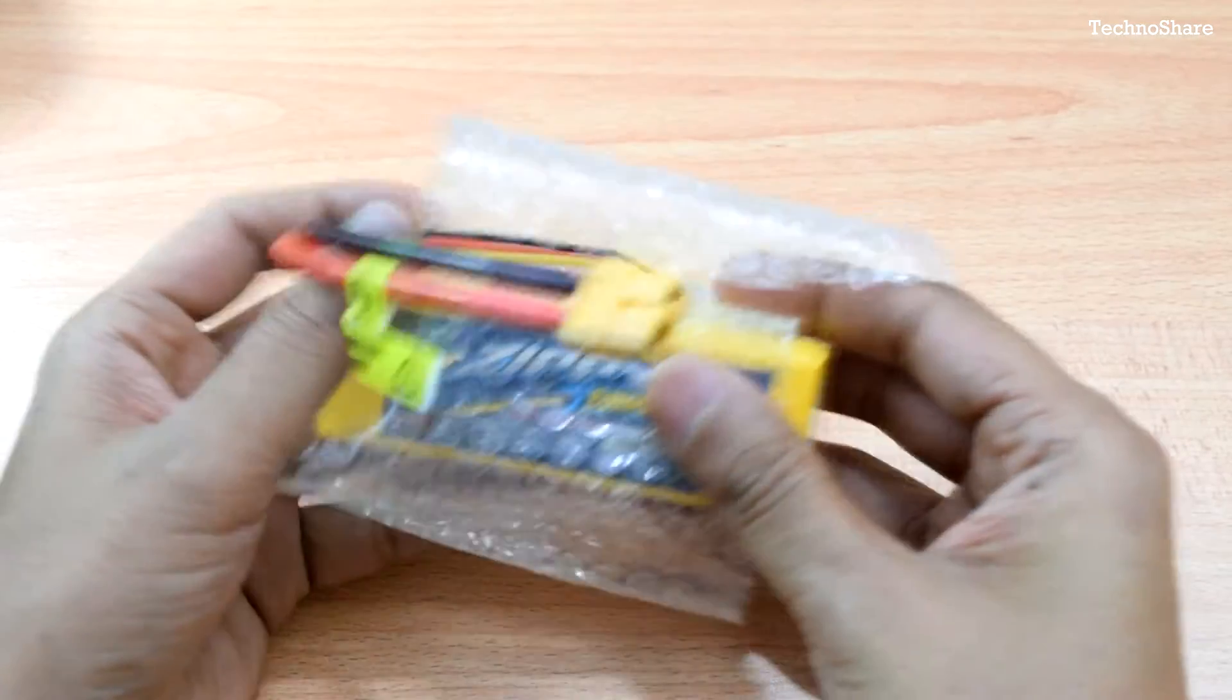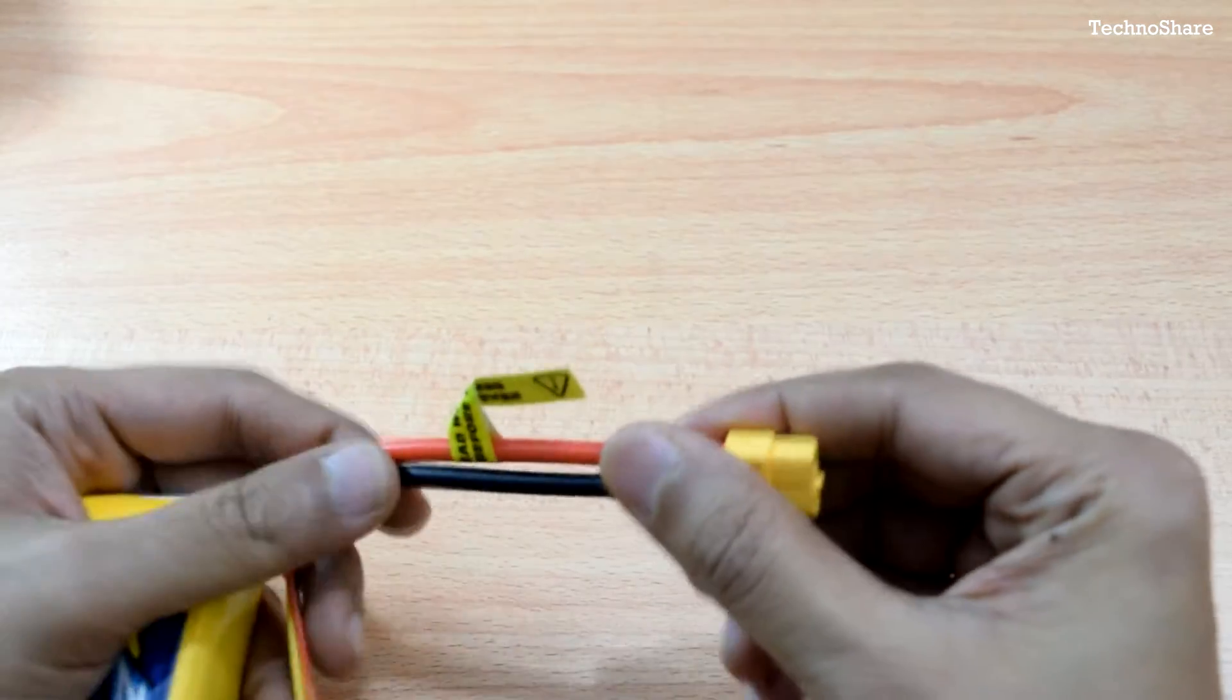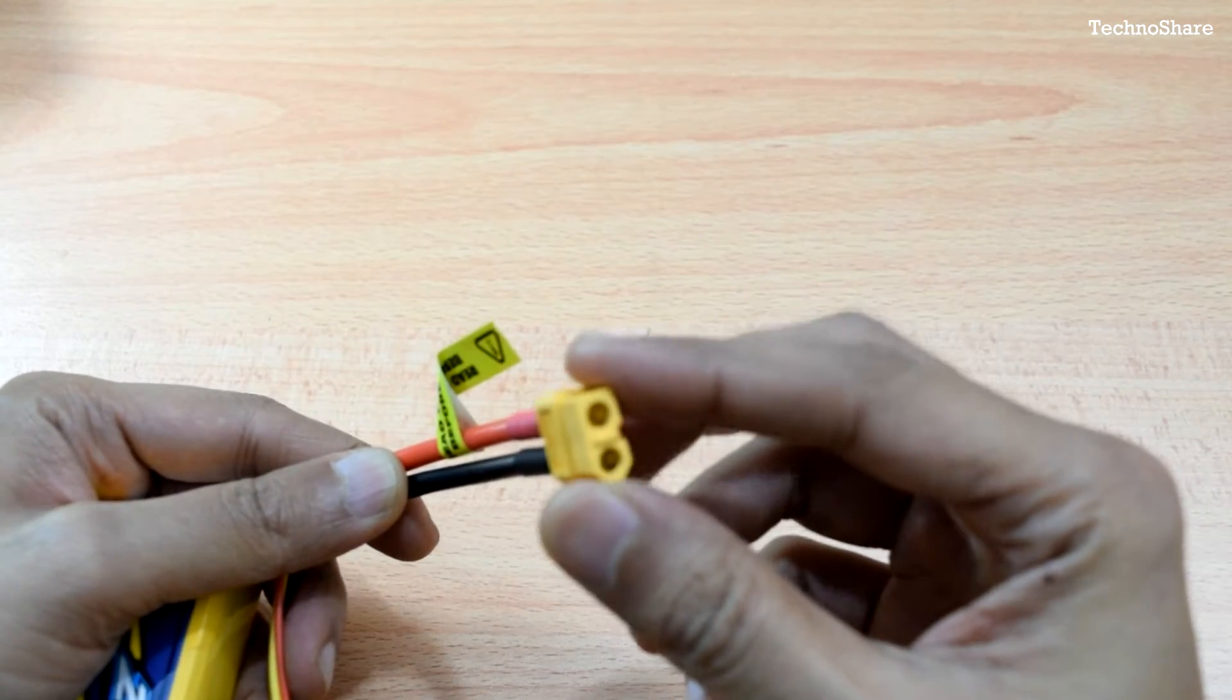So it comes with this neat bubble wrap. As you can see it's got a main discharge cable and it comes with this XT60 connector.